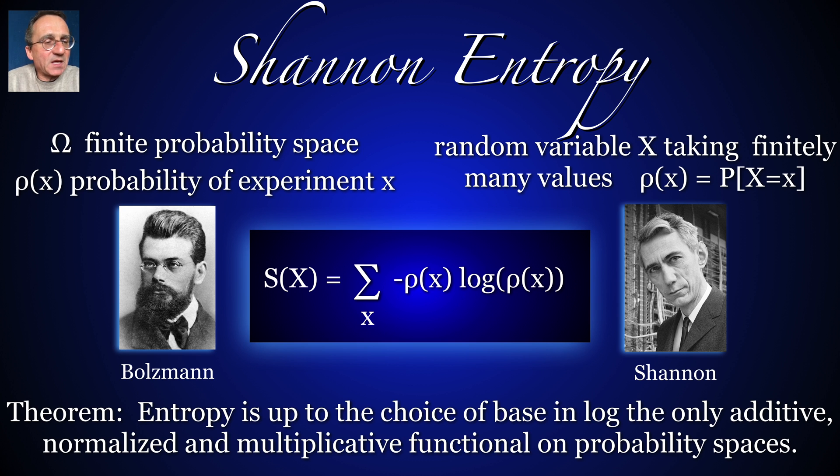Something different now. Entropy. It goes well together with Euler characteristic. Because both functionals entropy and Euler characteristic have nice properties. So what we have is we have a finite probability space. And then we can look at this functional minus px log px. And it's a nice functional. Shannon has introduced that in communication theory. Boltzmann in the context of statistical mechanics. And there's a result which Shannon proved. And it's up to a choice of base in the log. The only additive normalized multiplicative function on probability spaces. Which has exactly the same properties than Euler characteristic also. The Euler characteristic is the only additive normalized multiplicative function on simplicial complexes. So it's very nice to combine them.